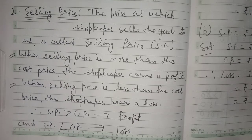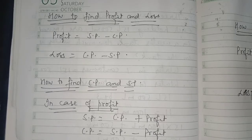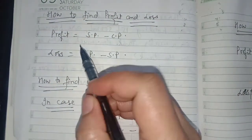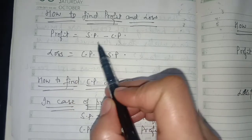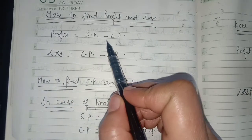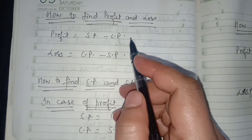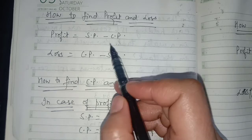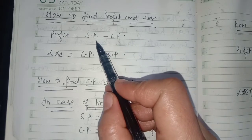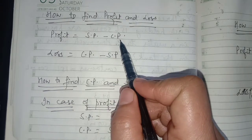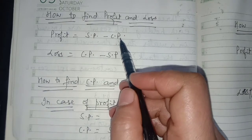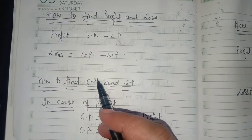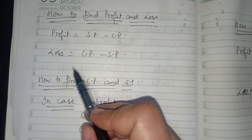Now, how do we find profit and loss? If you have to find profit, then the formula to use is: Profit = SP minus CP. This formula is used when selling price is more than cost price.